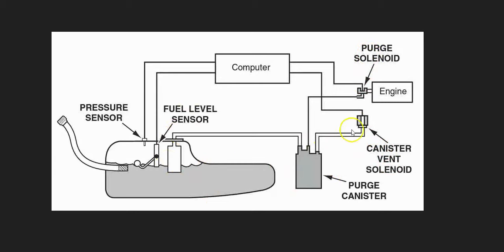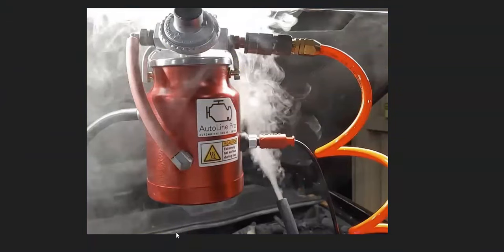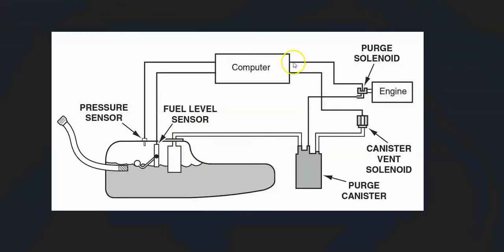If you've checked the canister, vent valve solenoid, and purge valve and they all look good, then very likely there is a leak somewhere in one of the hoses. These can be hard to find. A mechanic would use a smoke machine — feeding smoke into the EVAP system and wherever the smoke comes out, that's where the leak is. There are low-cost smoke machines on Amazon or eBay, or you can make one yourself for under five to ten dollars using YouTube guides.